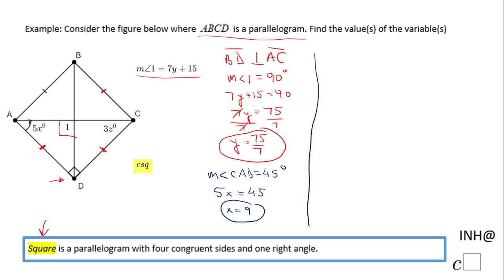Similarly, we can approach angle DCA, which is 45 degrees, because the diagonal AC bisects angle BCD, which is 90 degrees. So we're going to have 3z equals 45, and divide by 3, we get z equals 15.